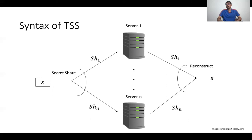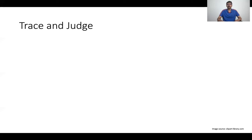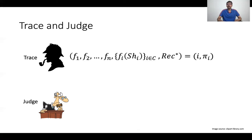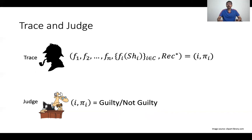In addition to the sharing and the reconstruction phase, there are two additional components of a traceable secret sharing. Namely, there is a special algorithm called the trace algorithm, and there is another algorithm called the judge algorithm. The trace algorithm takes in these collector functions f1 up to fn, the set of collected shares fi(share_i) for some subset C of size at least t, the reconstruction box, and outputs an identity of a cheating server and an evidence pi_i. And this evidence is examined by the judge algorithm, which pronounces whether the i-th server is guilty or not guilty.